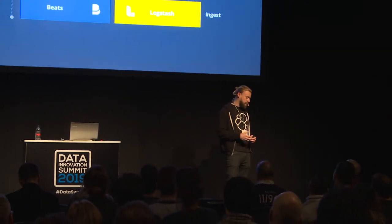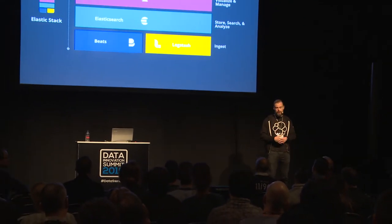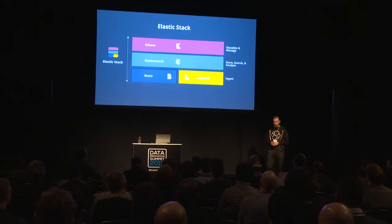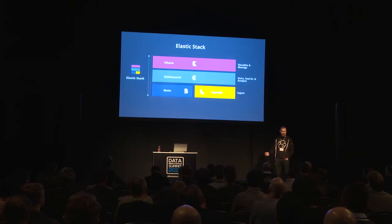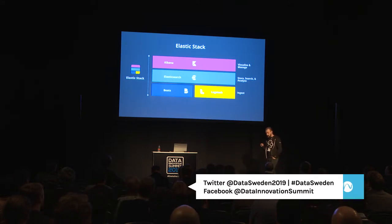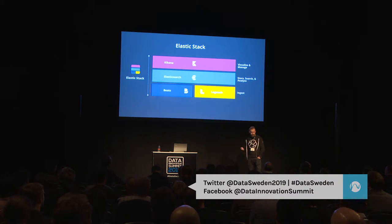At the heart of the Elastic Stack is Elasticsearch — where we store all the documents and data that you want to have searchable. It's horizontally scalable, going from one node on a laptop to server farms with hundreds of nodes. The biggest Elasticsearch cluster I've seen or heard about is a 400-node cluster — we're talking petabytes if not exabytes of data, all searchable at near real time. That's the strength of Elasticsearch.